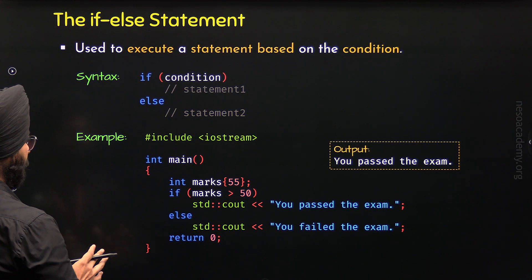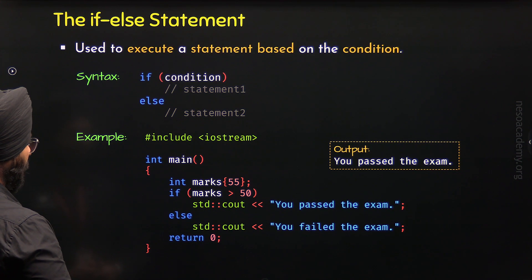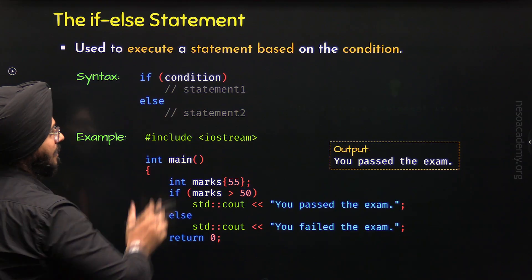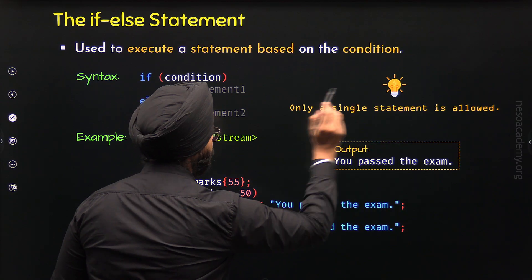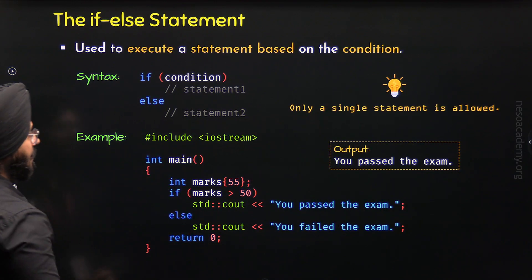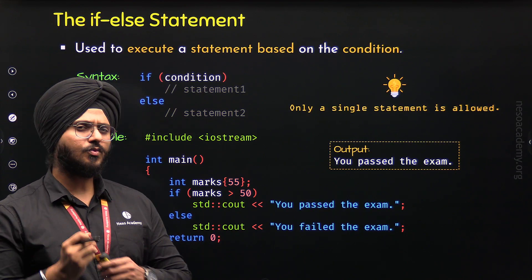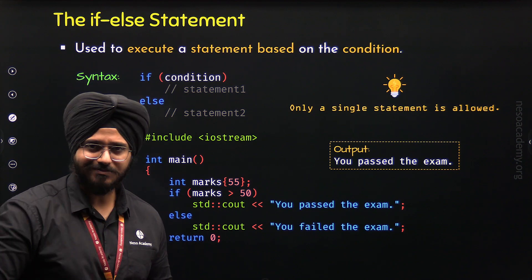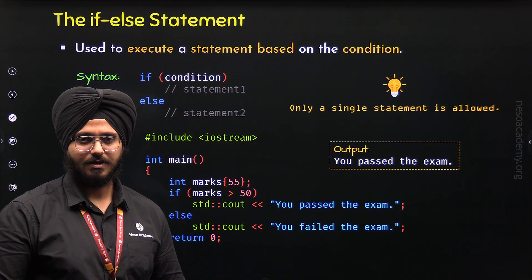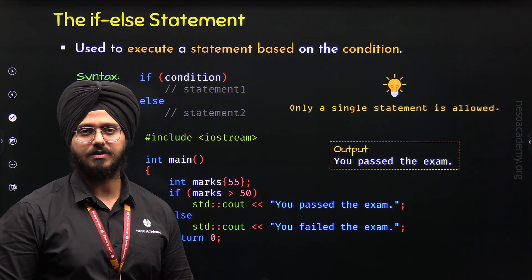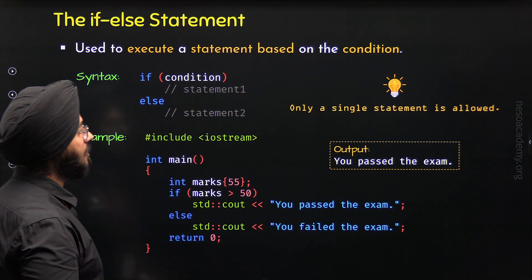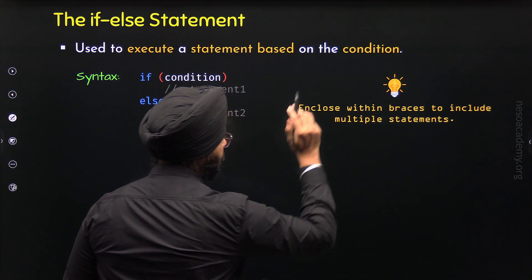Now we know the exact meaning of IF ELSE and how it works. You might have observed that we have just one statement after IF and ELSE. This is because according to this syntax, we are allowed to include only a single statement after IF and ELSE. Only a single statement is allowed according to the syntax. But what if we want to execute multiple statements based on a condition? We can do that too — we need to form a compound statement. A compound statement is a statement which has multiple statements, and we can form a compound statement with the help of braces.